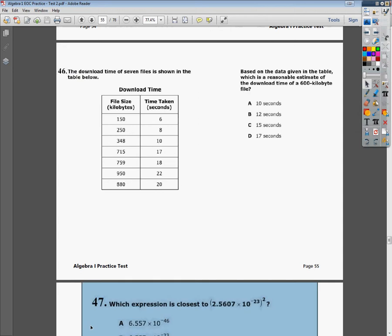Welcome, this is the Tennessee Algebra 1 Practice Test 2, question number 46. The question says the download time of seven files is shown in the table below, and it gives you the file size in kilobytes and then the time taken in seconds.